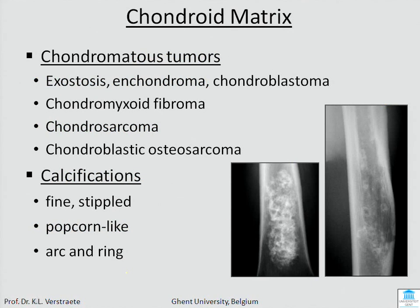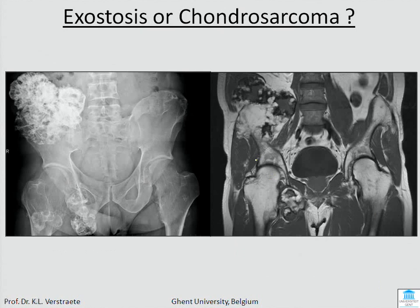How can you recognize cartilage on X-ray? You know it is fine stippled, popcorn-like, arcs and rings. Here you can see rings and arcs, and this is more popcorn-like. These tumors occur in many lesions. On X-ray you cannot know which one is an osteocartilaginous exostosis and which one is malignant — so you need MRI to see the thickness of the cartilaginous cap.